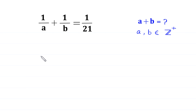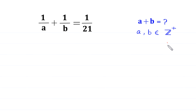Hello everyone, you are welcome. We will solve this algebra equation: 1 over a plus 1 over b is equal to 1 over 21. Our job is to find all possible values of a plus b such that a and b are positive integers, meaning a is greater than 0 and b is greater than 0.